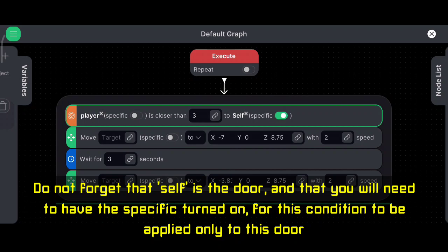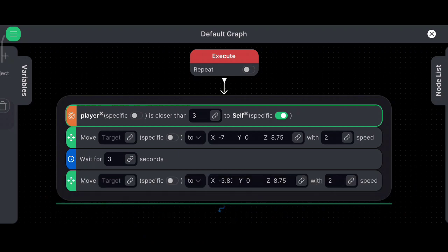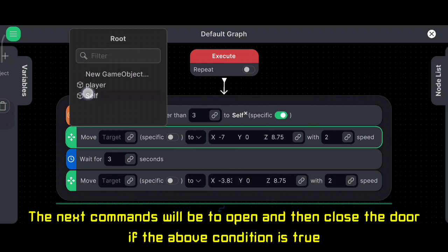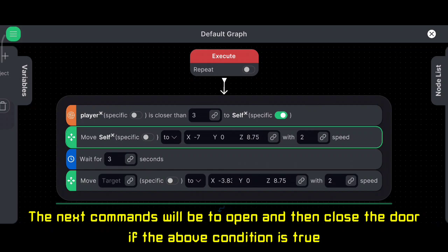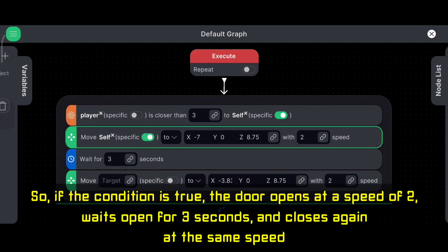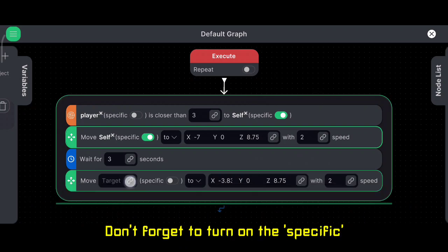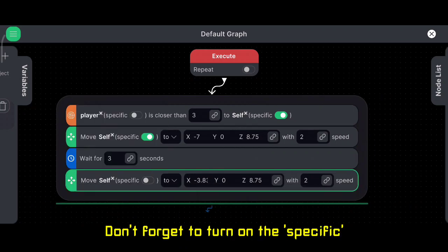The next commands will be to open and then close the door if the above condition is true. So if the condition is true, the door opens at a speed of two, waits open for three seconds, and closes again at the same speed. Don't forget to turn on the specific.